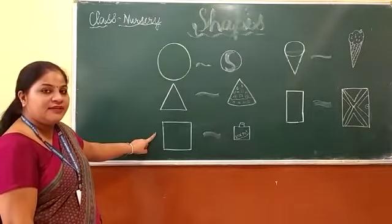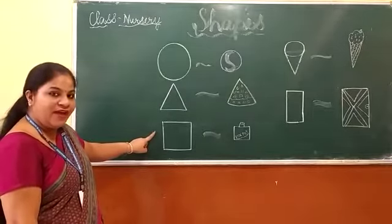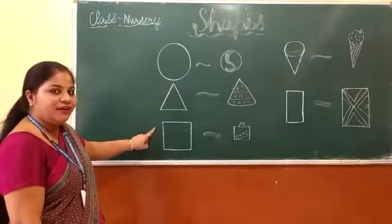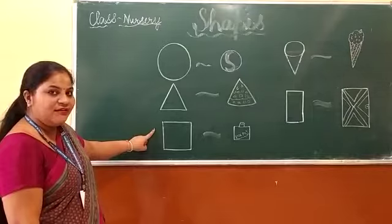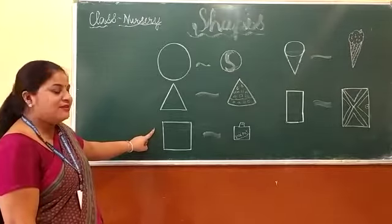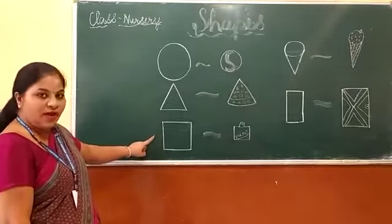And another one is a square. Yes students, which shape is this? This is a square.